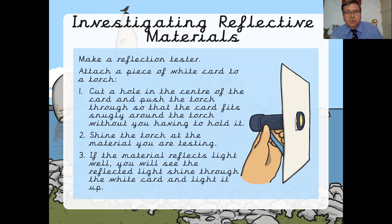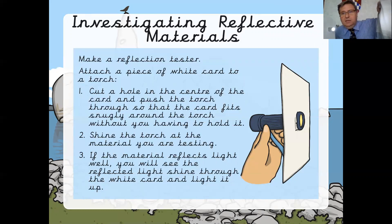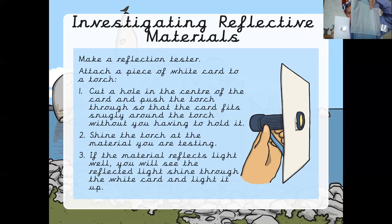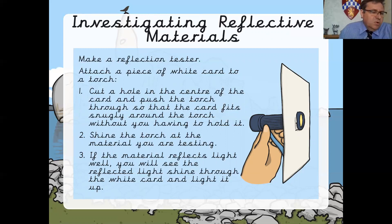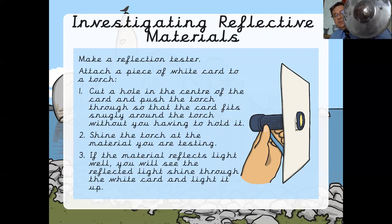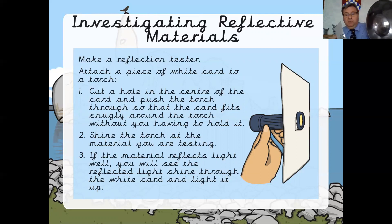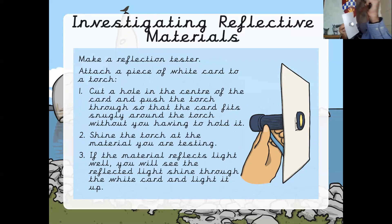I've got a couple of items here I'll show you. The first is the pillowcase — those of you who joined the last lesson will know this. We can see that if we reflect the light onto the pillowcase it does reflect light back a little bit, but not a huge amount. So we know this material isn't that reflective even though it's quite light. Now this is actually a metal shield — as you can see it's quite shiny, so it really should reflect light well. And when we hold it up you can see that the light reflects back onto the card and lights it up really well.